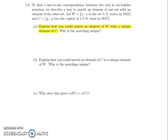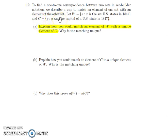Let's take apart the first part of the question: explain how. Because this is asking us how to do something, our answer is going to be the description of a process — here is what I'm going to do. I want to match an element in W to a unique element in C, and I'll worry about uniqueness as the second part. W consists of the set of US states, and C is the set of capitals of US states. I want to take something that is a state and somehow match it to something that is a capital.